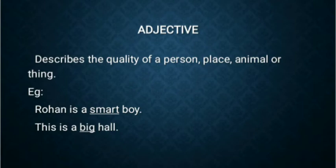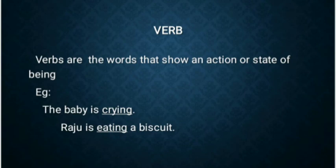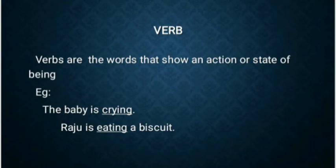Then comes the fourth type of parts of speech, that is verb. The most important part of speech is the verb — we can't even frame a sentence without a verb. Even we can frame a sentence without a noun and a pronoun, but we can't do anything without a verb. Verbs are words that show an action or state of being. For example, 'The baby is crying' — the word crying denotes the action of the baby. Another example: 'Raju was eating a biscuit' — the word eating refers to Raju's action, so it is called a verb.